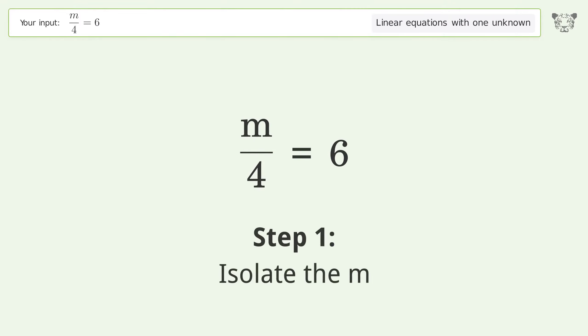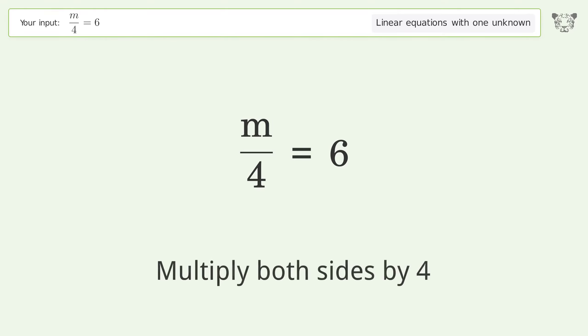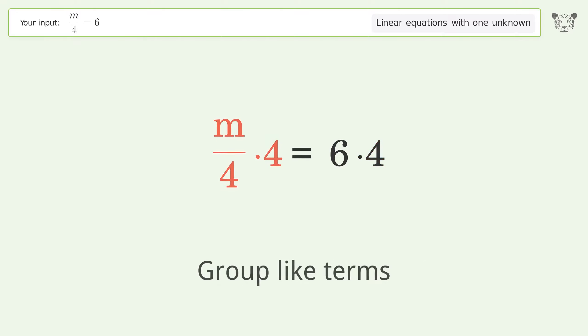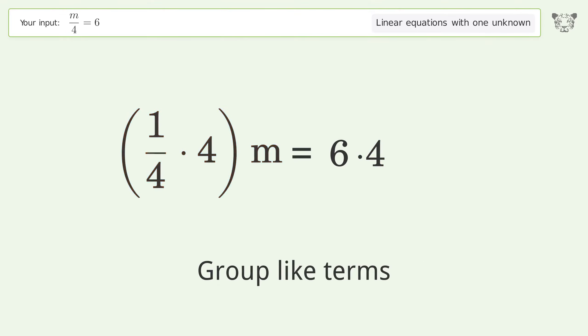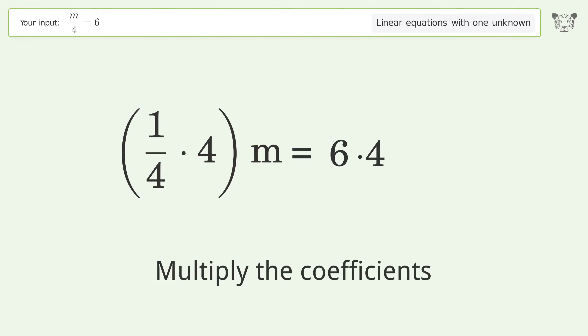To isolate m, multiply both sides by four. Then group like terms, and multiply the coefficients.